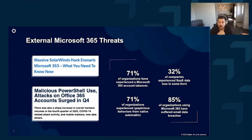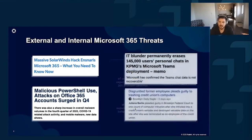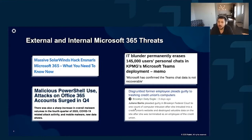It's not just external threats — there are also internal situations, whether it's a rogue admin causing havoc, or like this example from KPMG, where they went to apply a retention policy and accidentally applied it to 145,000 users. With a click of a button, all of their chat history was deleted. These kinds of situations have to be combined with the external threats we're seeing in the ecosystem to really understand what the overall threat landscape looks like.